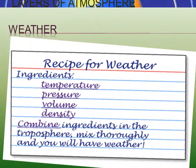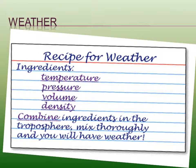Next we will look at the properties of weather: Temperature, Volume, Density, and Pressure. Combine these ingredients, mix thoroughly in the troposphere, and you will have weather. Temperature is the degree of hotness or coldness measured using thermometers, with units in Fahrenheit or Celsius.